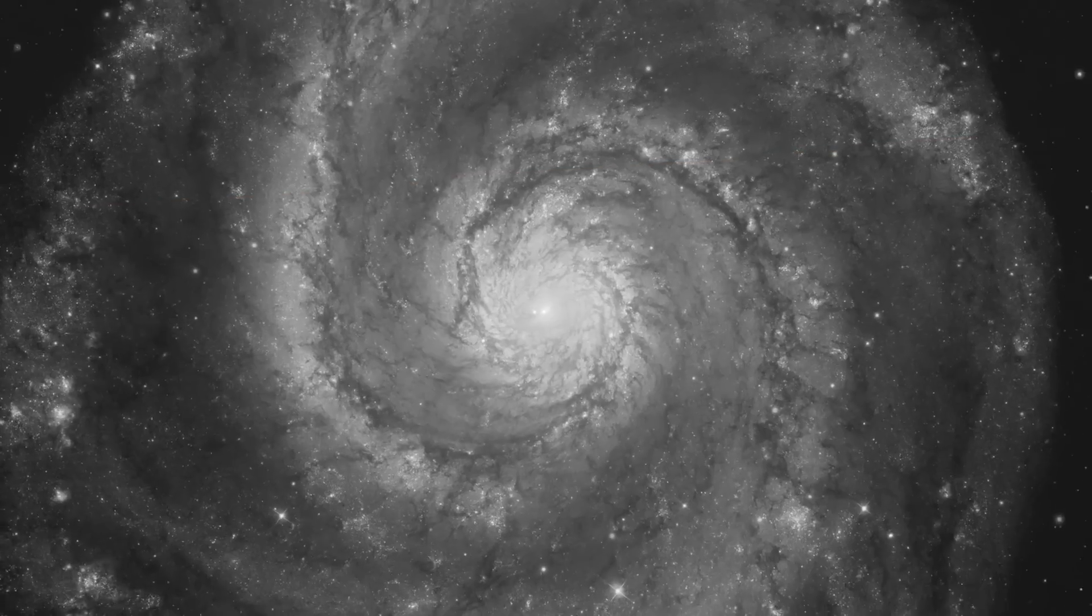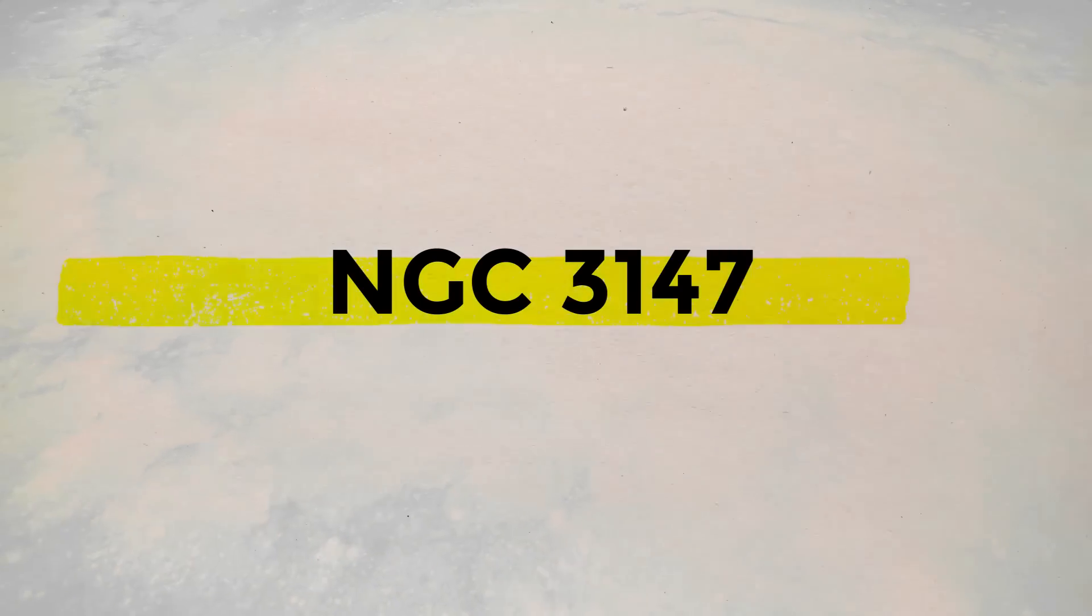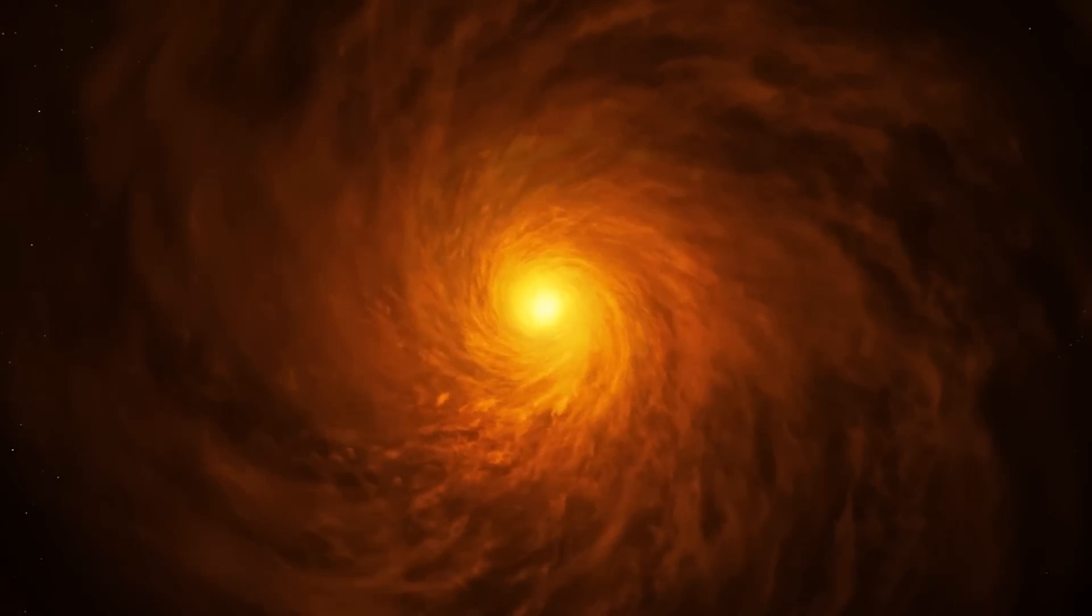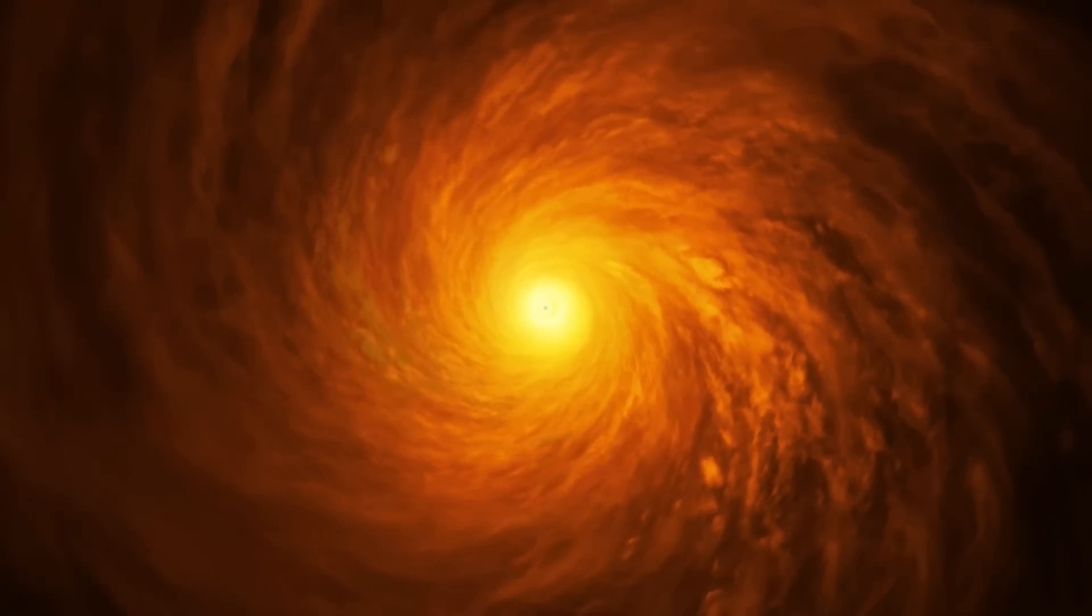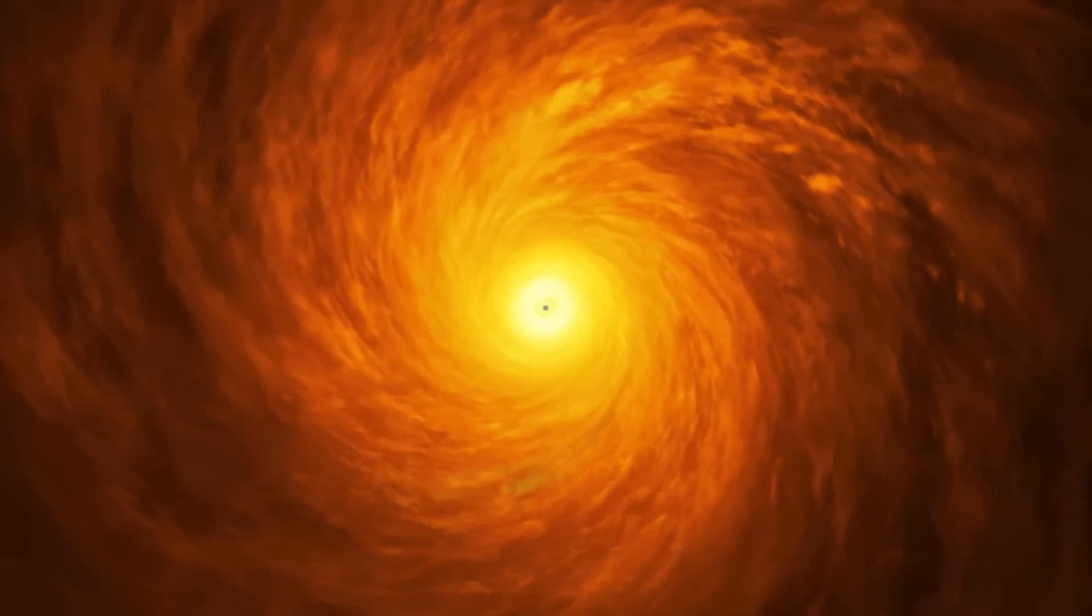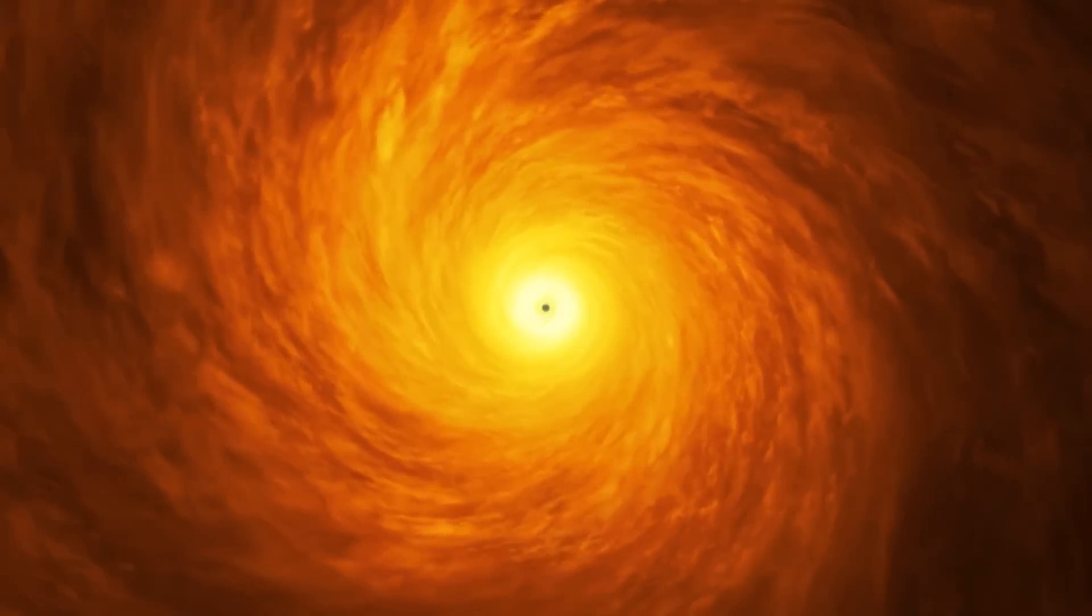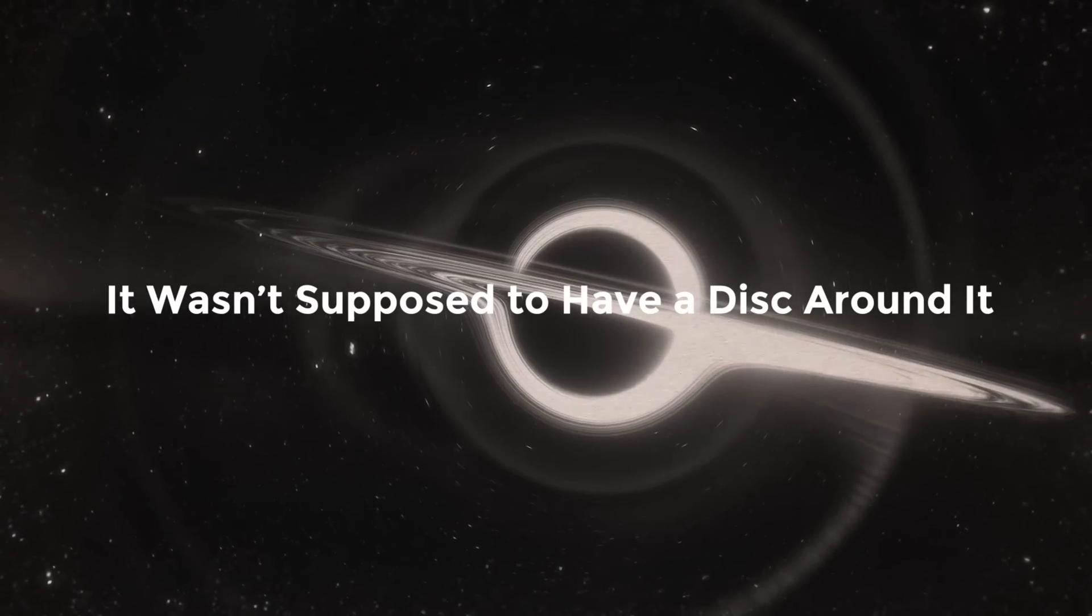The black hole is at the heart of a spiral galaxy, NGC 3147, located 130 million light years away. There isn't enough matter drawn in by this galaxy's gravitational pull to fuel its black hole, because it's believed to be a low-brightness galaxy. It wasn't supposed to have a disk around it.